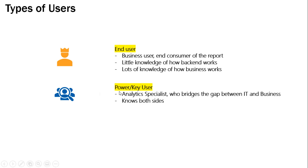Then there are power or key users. These are the folks who understand a bit of business and a bit of IT. They are in between — they bridge the gap between end user and the IT team. They know a little bit of both sides, they understand the technical part and they also understand the business part.